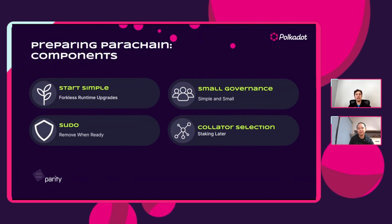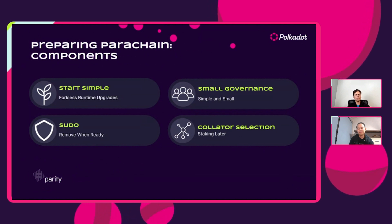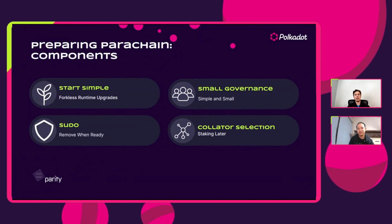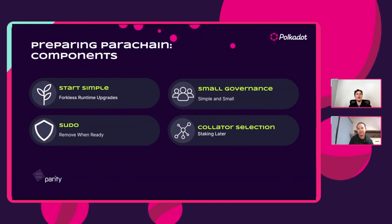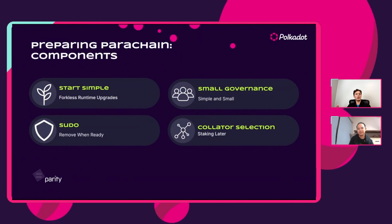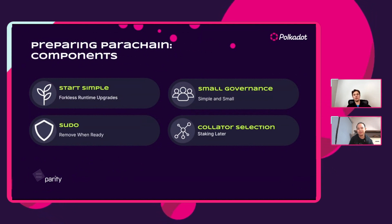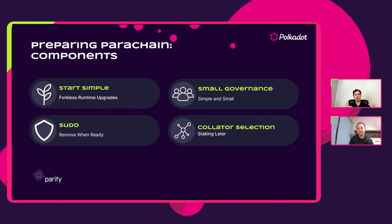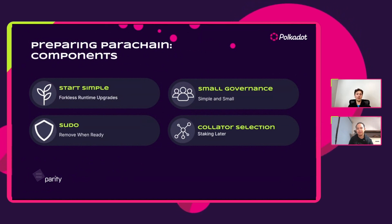We also recommend starting with a small governance — this can be optional, but start with a small, simple governance with some key stakeholders you can trust to test it out. Test whether governance can perform a runtime upgrade. If you're confident with this, use your governance to remove sudo. It's still a little bit centralized, but more decentralized than pure sudo. Then start adding more components and move to fully decentralized when you are ready.